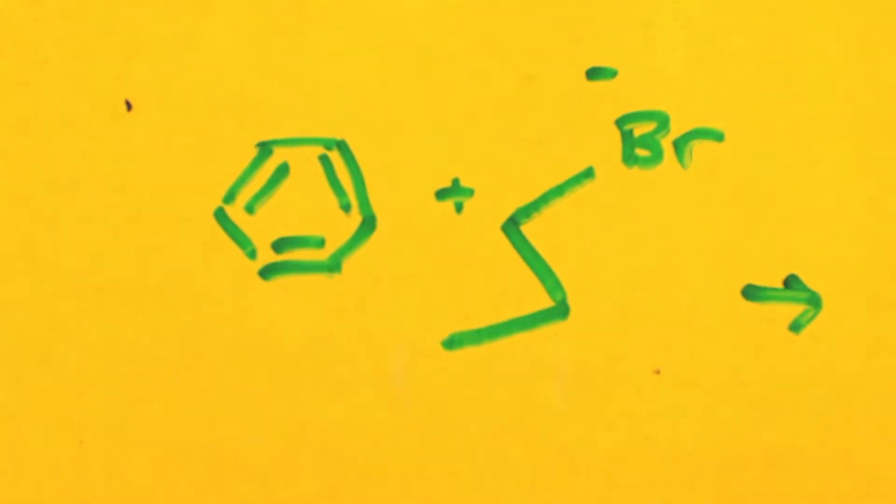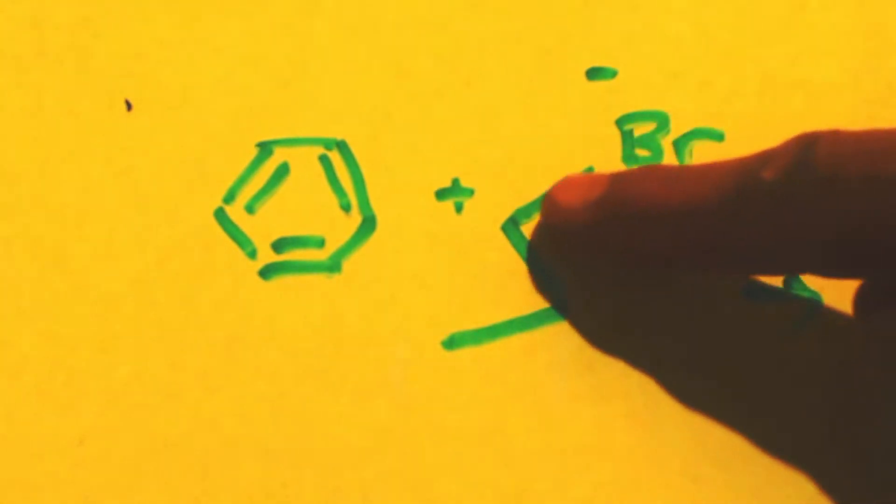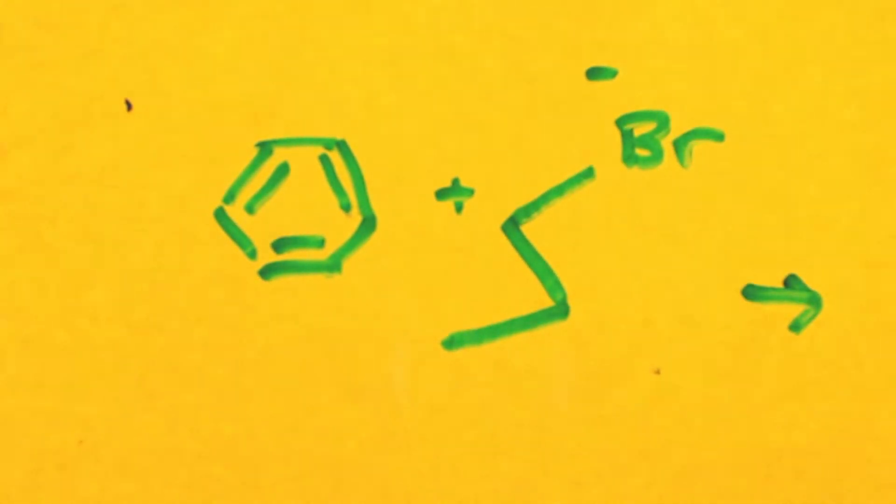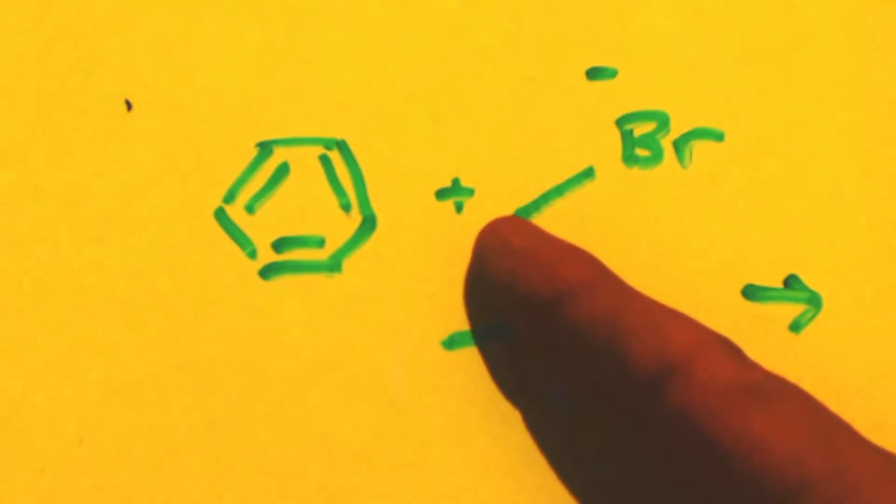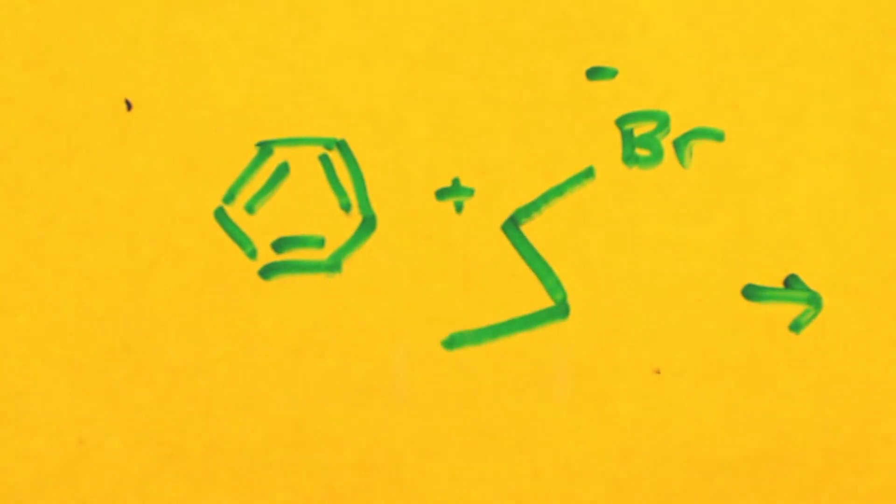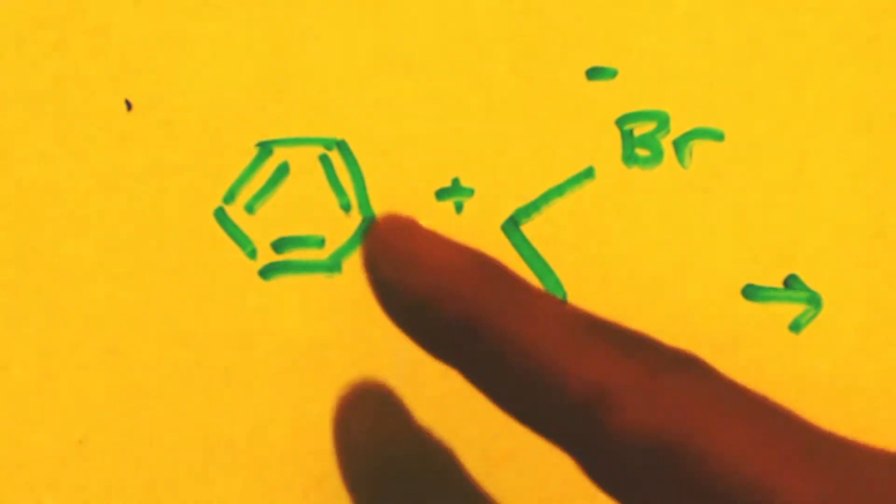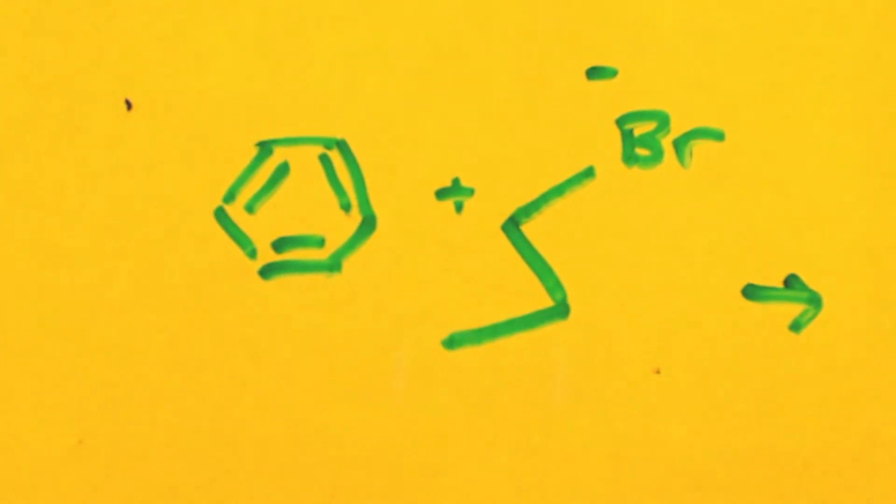Now the bromine is electronegative, so it's going to pull electron density towards it and make this carbon positive. This benzene is neutral but it has a lot of electron density above and below the plane of the molecule in the pi orbitals. All those pi electrons are a lot of electron density. So these two should react—you got a delta positive charge and you have a lot of electron density—but they don't.